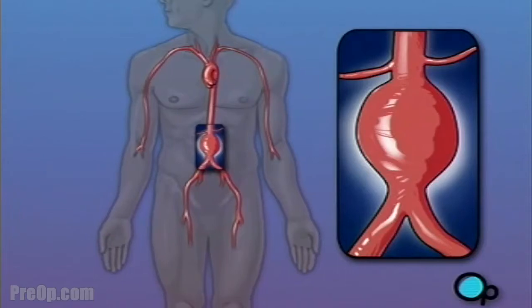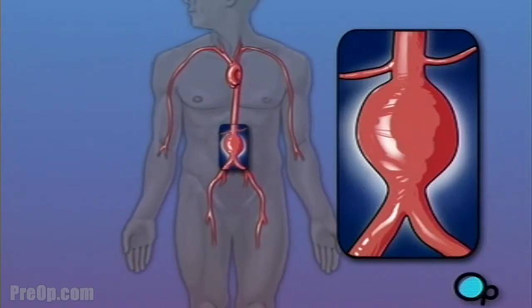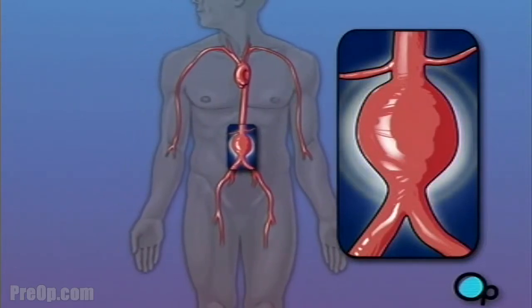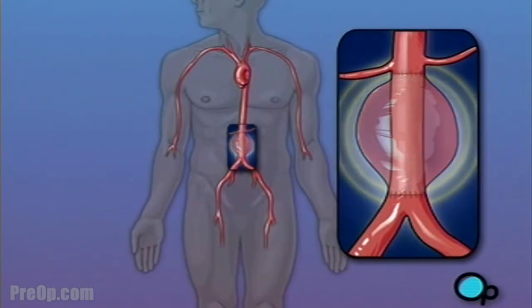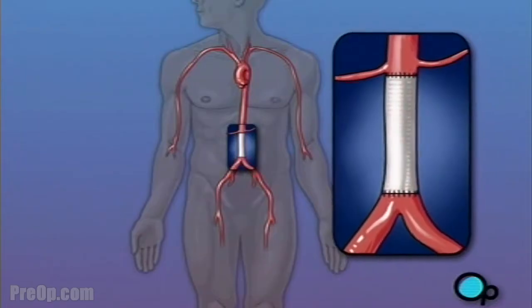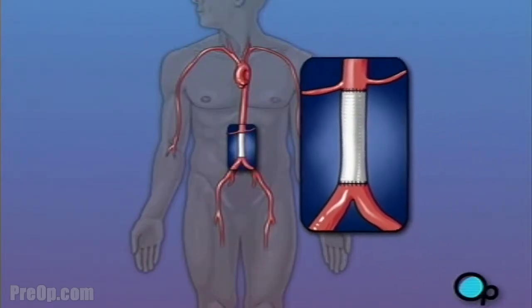Aneurysms are dangerous because the blood clot weakens the blood vessel and can cause it to burst. The surgery your doctor has recommended will remove the blood clot and reinforce the weakened wall of the aorta.